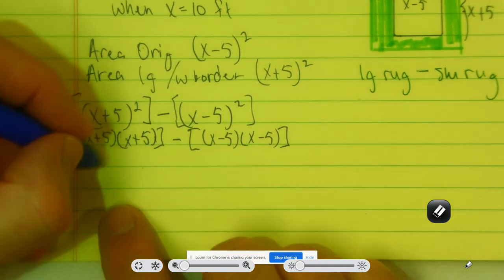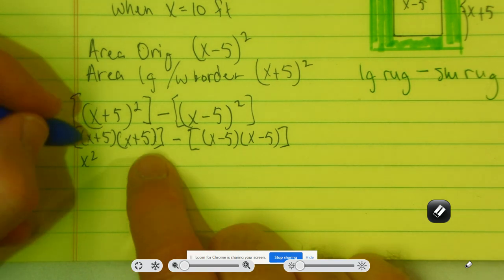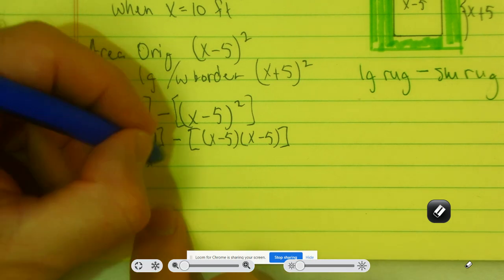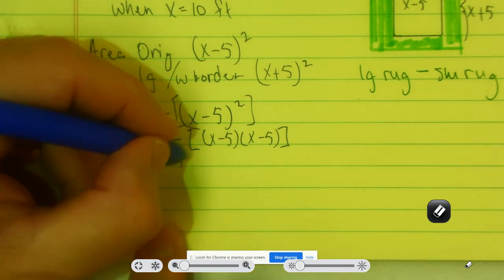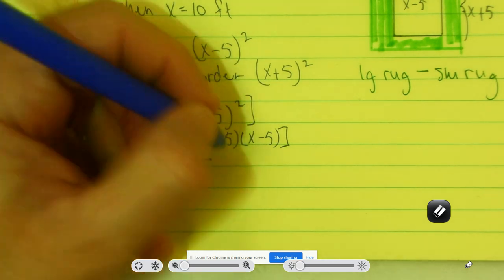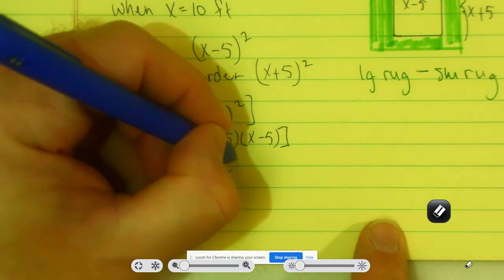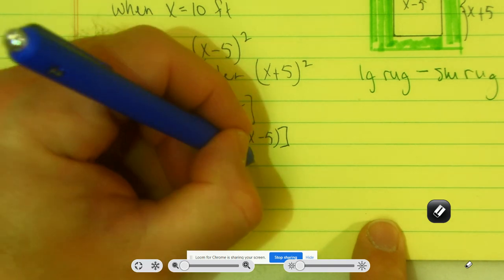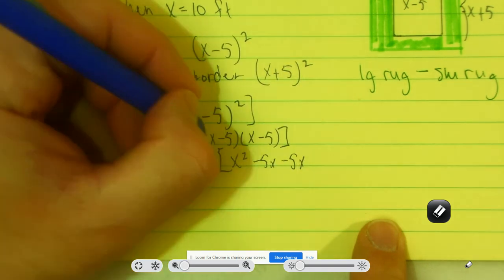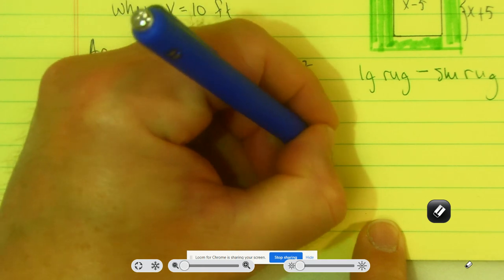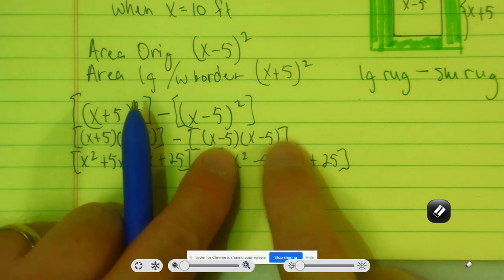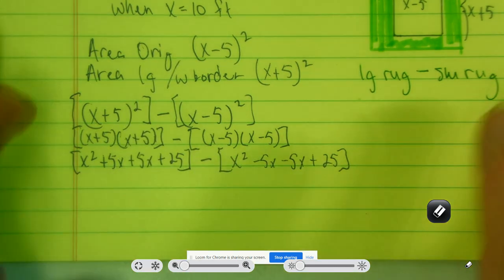So I get x squared here plus 5x, plus 5x, plus 25. Leave that in the brackets for the moment, minus. And then in these here's would be x squared minus 5x, minus 5x, plus 25. So x squared minus 5x minus 5x plus 25. Got everything covered now.